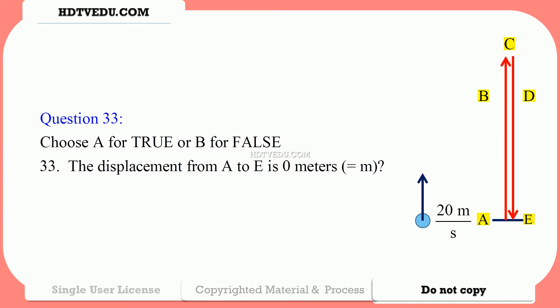Question 33. The displacement from A to E is 0 meters. Very true. A and E are exactly the same vertical position. So the vertical displacement is 0.